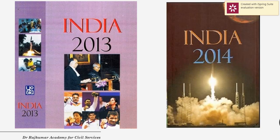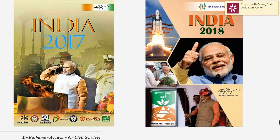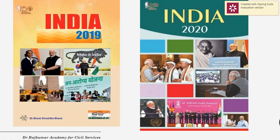The 2013 yearbook shows the President giving oath to then Chief Justice Kapadia, and winners of the Asian Games. The Prithvi and Agni missiles are shown with respect to intercontinental ballistic missiles. The 2014 yearbook also depicts India's achievements in space technology. From 2015 onwards, the cover page features government scheme monikers — Swachh Bharat, Smart City, Skill India, Beti Bachao Beti Padhao, Digital India. By 2019, programs like Ayushman Bharat and Jan Arogya Yojana are featured.